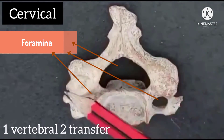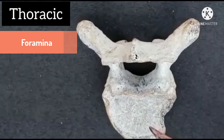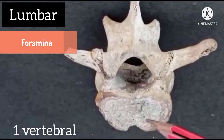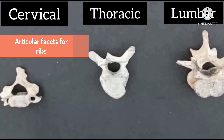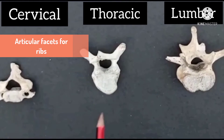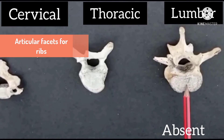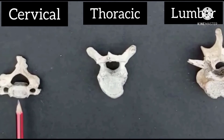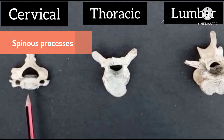The formula of the cervical bone is one vertebrae and two transverse foramina. The thoracic bone has one vertebrae, and the lumbar also has one vertebrae. Articular facets for ribs are absent in the cervical bone, present in the thoracic bone, and absent in the lumbar bone.